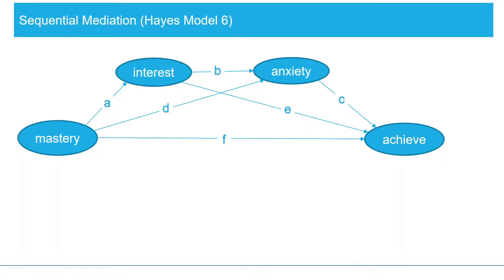This is the model we are going to run. If we compare it with Hayes' PROCESS macro for SPSS, it is model number 6. In this model, achievement is affected by mastery goals and this relationship is mediated by two variables: interest and anxiety. At the same time, the relationship of interest and achievement is also mediated by anxiety. This is the case of sequential mediation, or serial mediation.